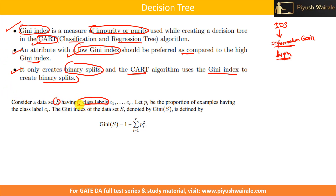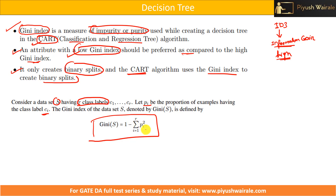Now, how do we calculate the Gini Index? Consider a dataset having class labels C1 to CR. Let PI be the proportion of examples having class label CI. The Gini Index of dataset S is given by: Gini(S) = 1 minus the summation from I equals 1 to R of PI squared. Here R is the number of class labels, and PI is the probability of that particular class.